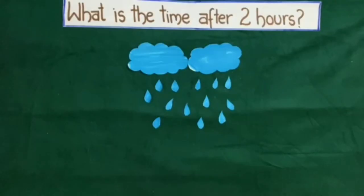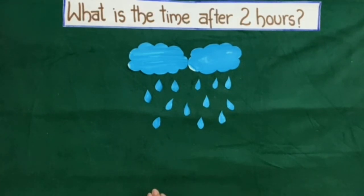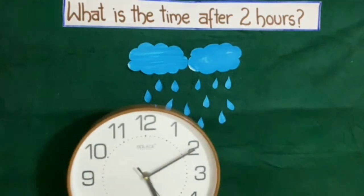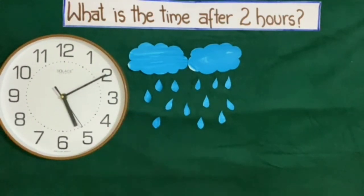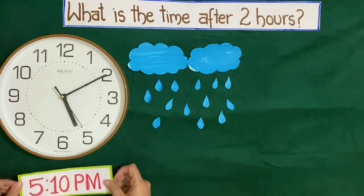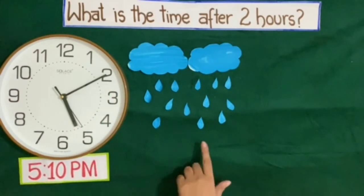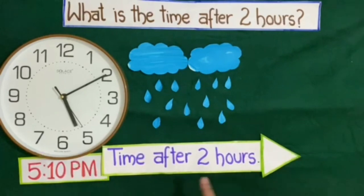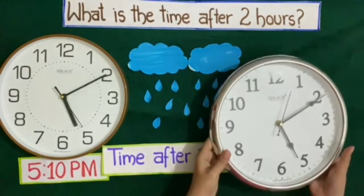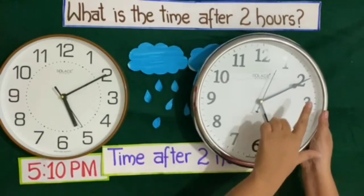So let's start. In the evening the sky was clear and suddenly clouds appeared and it started raining. When I saw the time on the clock it was 5:10 PM, and it continuously kept raining for 2 hours. When the rain stopped after 2 hours, the time after 2 hours will be — so let's say it is 5:10.